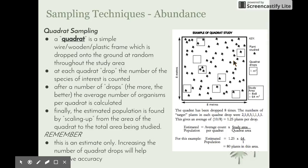We can also use sampling techniques to determine abundance — how many organisms are in a particular area. One technique is the quadrat sample. A quadrat is a simple wire, wooden or plastic frame which is dropped onto the ground at random throughout the study area. At each quadrat drop, the number of species of interest is counted. After a number of drops — the more the better — the average number of organisms per quadrat is calculated. The estimated population is then found by scaling up from the quadrat area to the total study area.